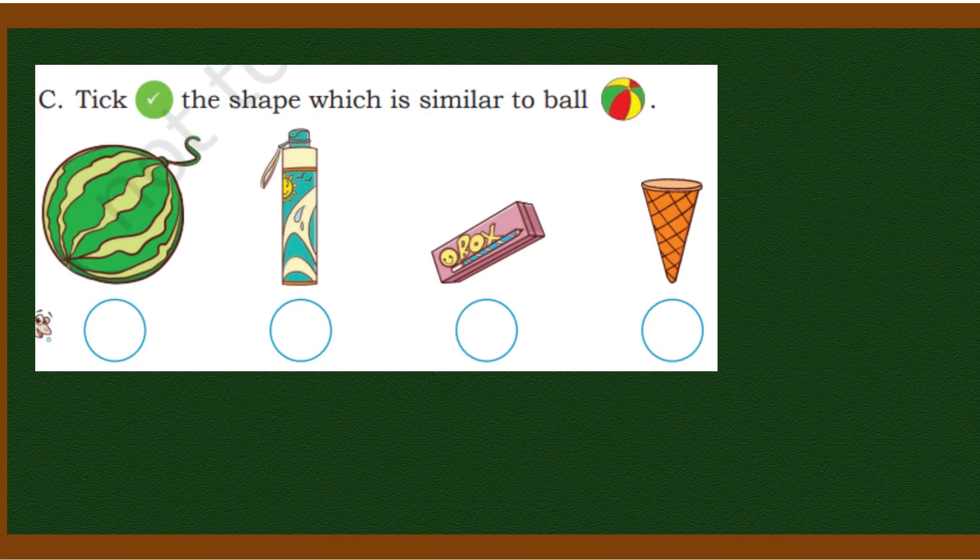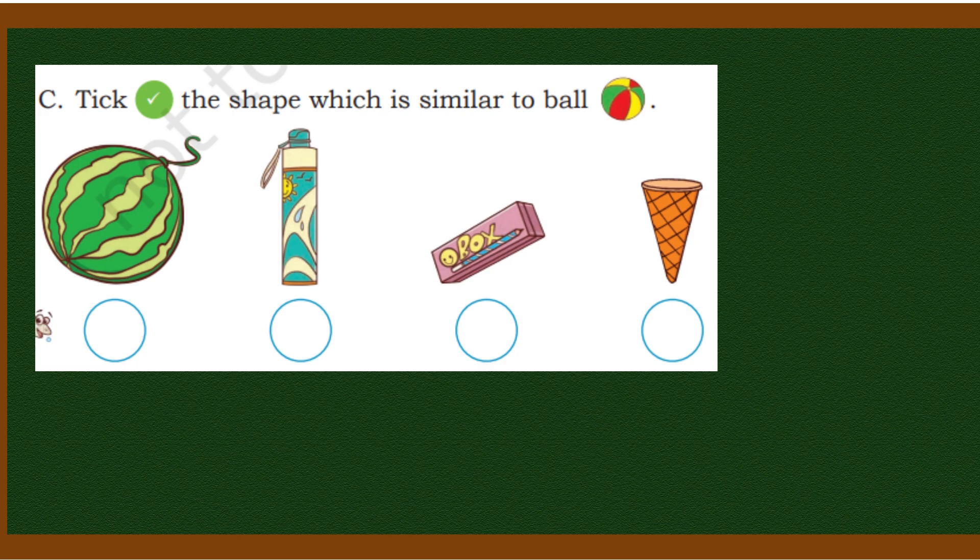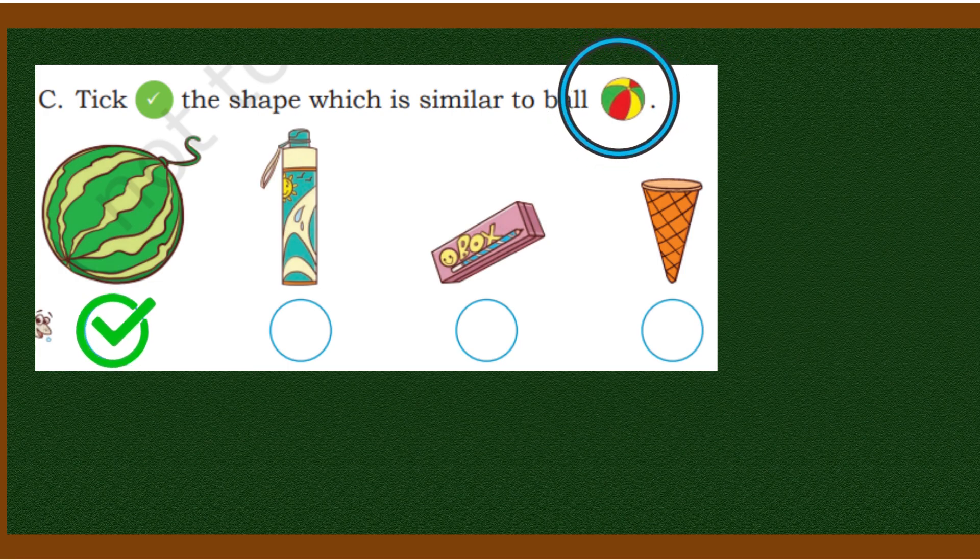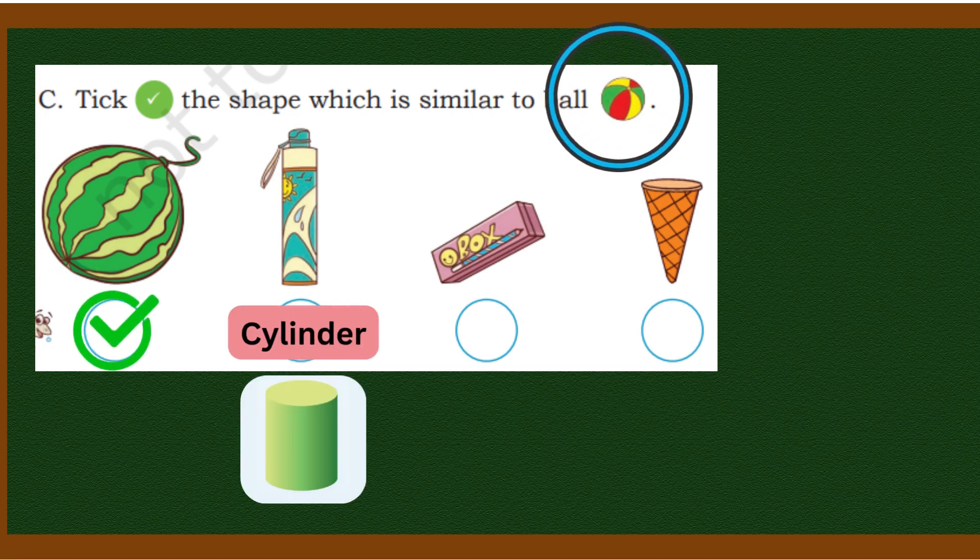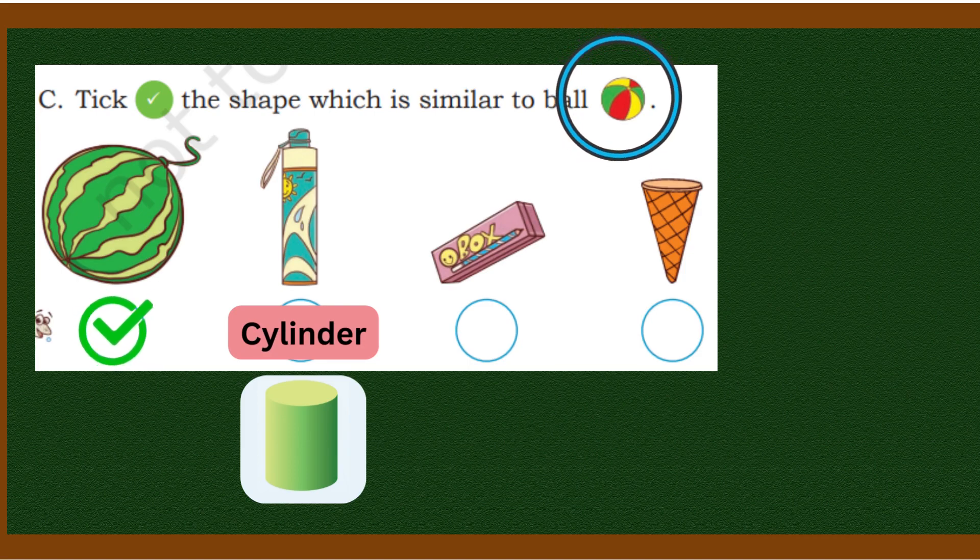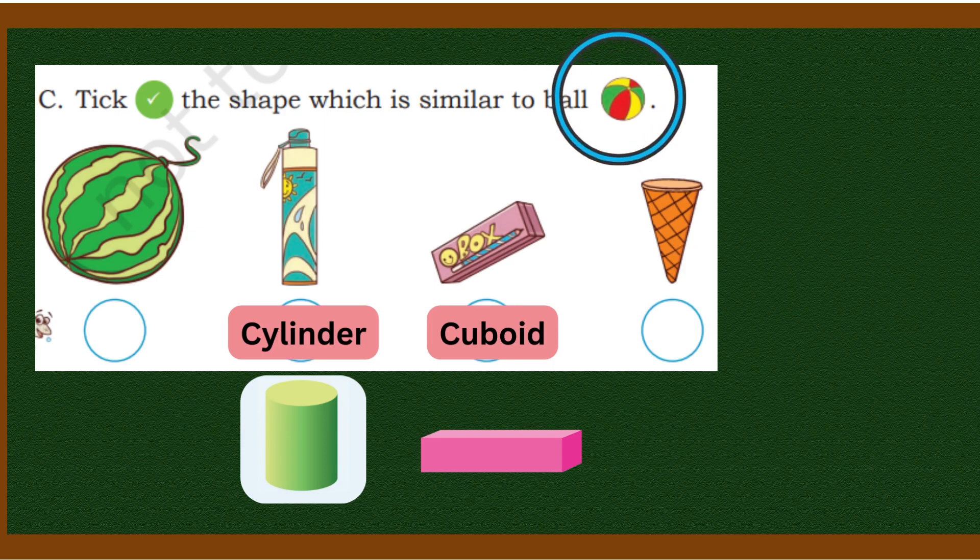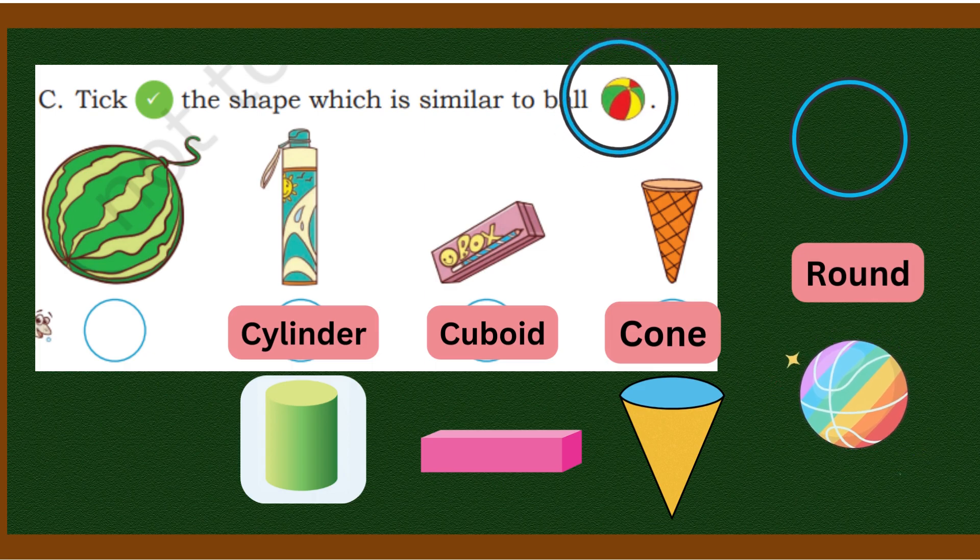We have to tick the shape which is similar to ball. Very simple. Here we are having watermelon, so we will tick it because it looks like a ball. What is this? Water bottle. Its shape is cylinder. Then pencil box - its shape is cuboid with length, breadth, and height. Then we are having ice cream cone - its shape is conical. We only want round shape, so we will tick watermelon.